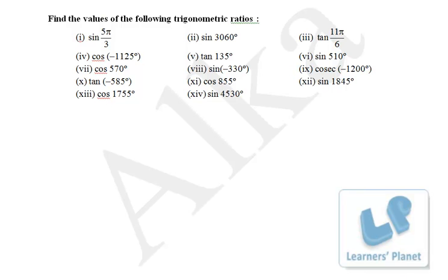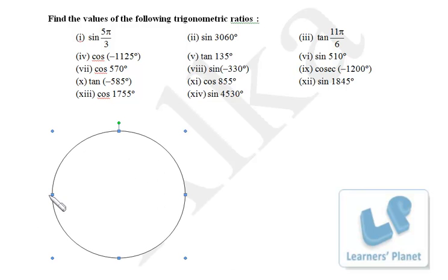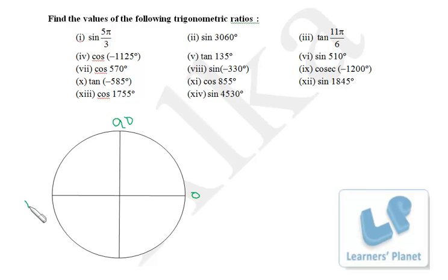First of all, we draw the circle so that it's easy for us. This is the circle, and we have the four quadrants. I write down 0, 90, 180, 270, and 360.